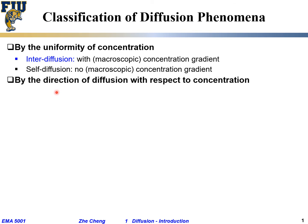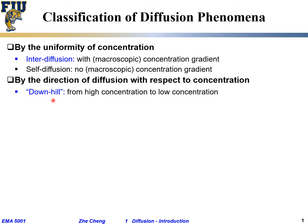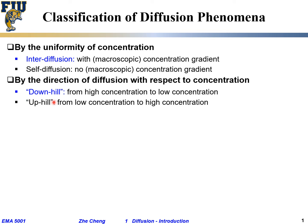Classification of diffusion can also be based on the direction of diffusion with respect to concentration — this is for interdiffusion. There can be so-called downhill diffusion, which means going from high concentration to low concentration. The microscopic species, for example atoms or molecules, are moving from regions of high concentration to regions of lower concentration. This is called downhill diffusion.